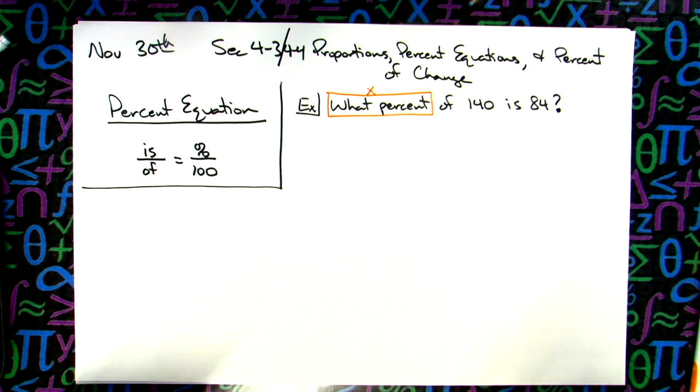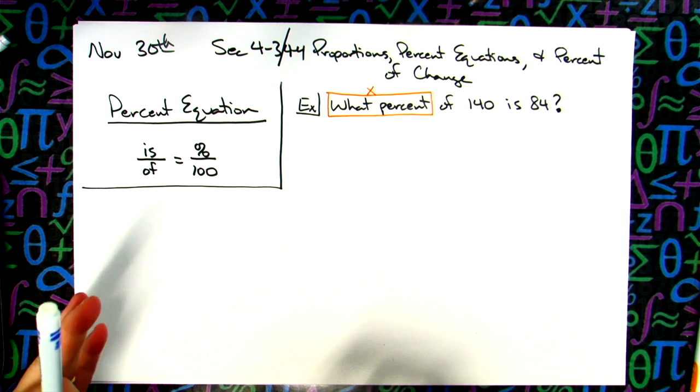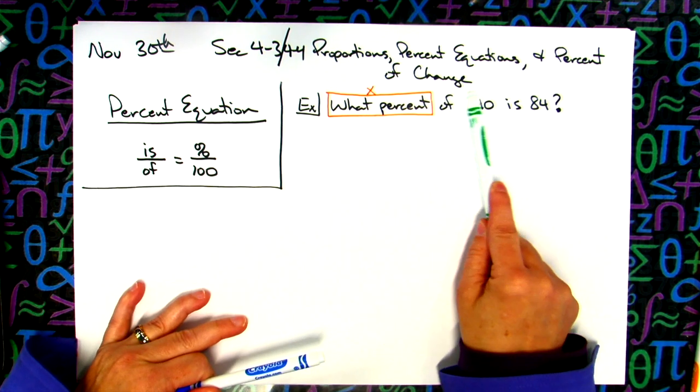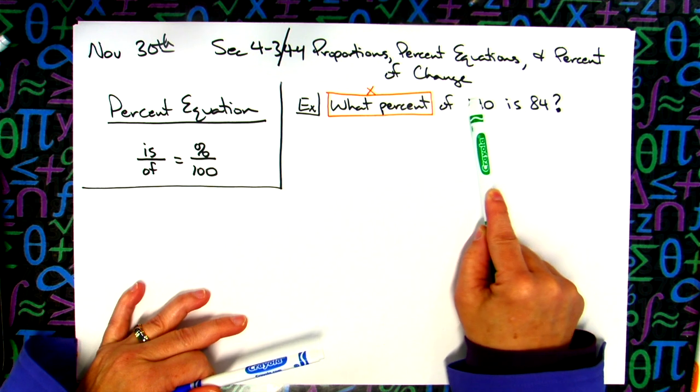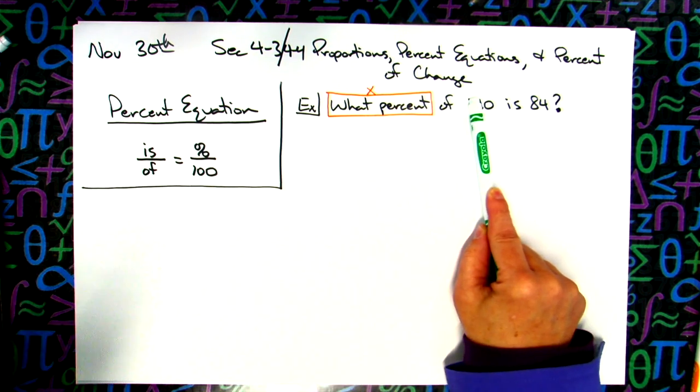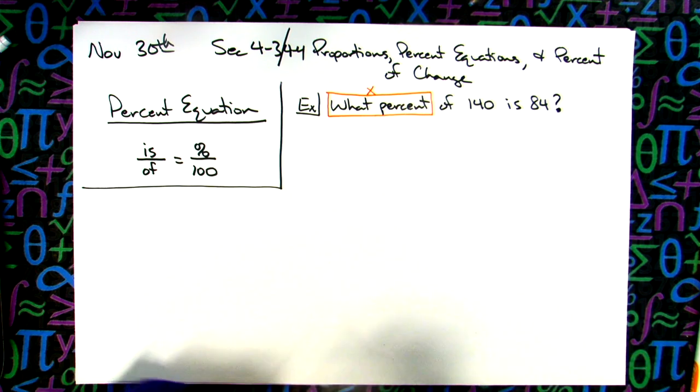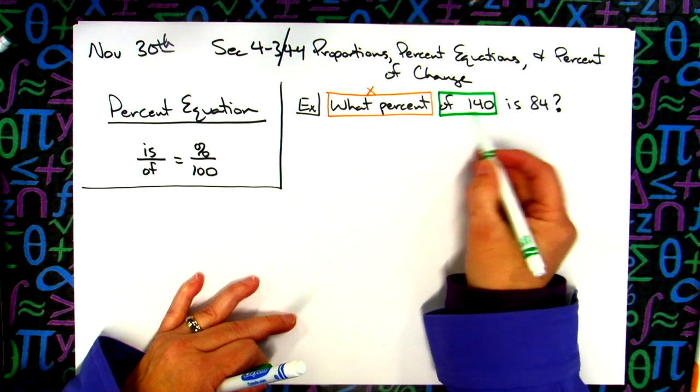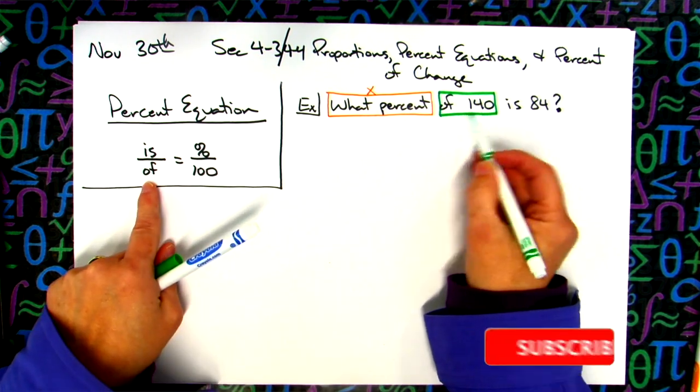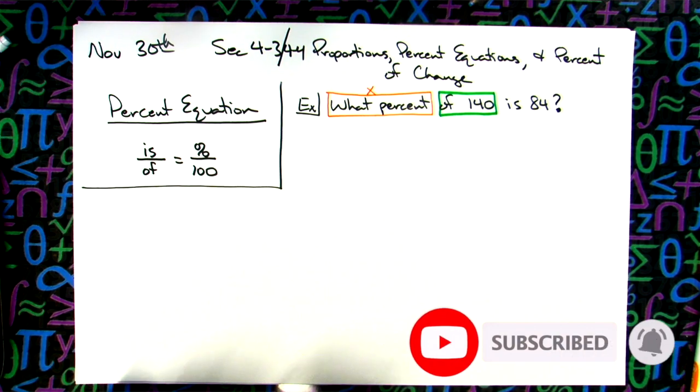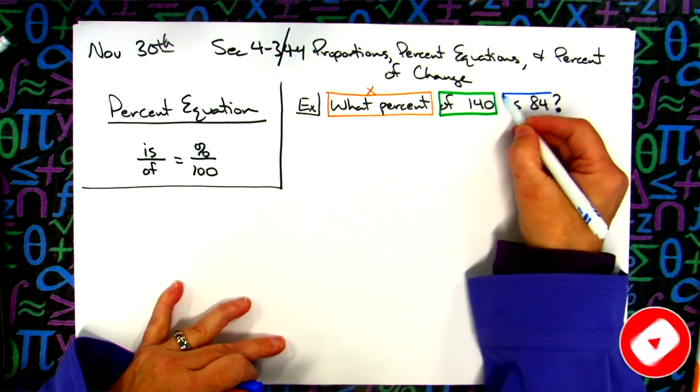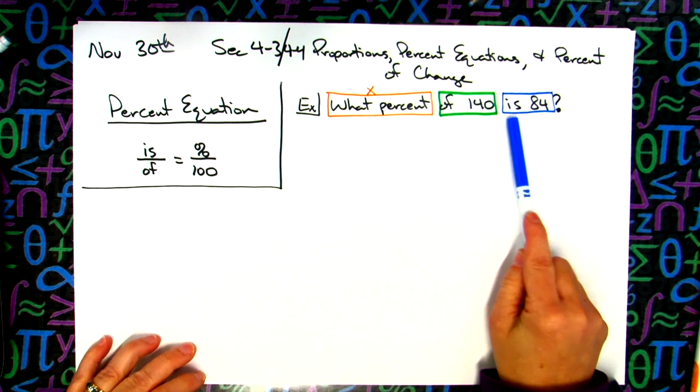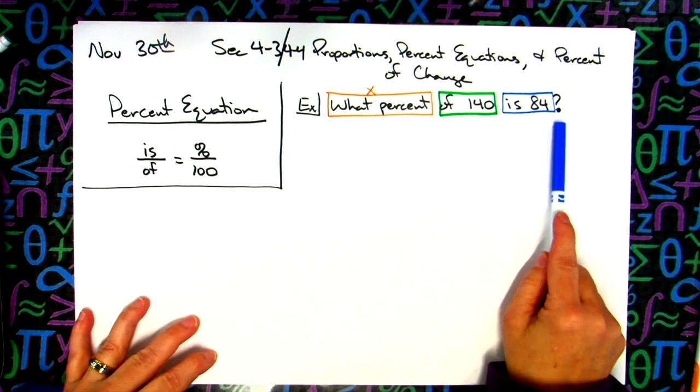We're going to go the rest of the way through the sentence and associate a number with each word, the one that sits next to it. If I keep going left to right, what percent of 140, that means 140 is going to be substituted in for the of number. If I finish reading this sentence, is 84, the 84 is associated with the is. You need to write these sentences down, box the stuff in.